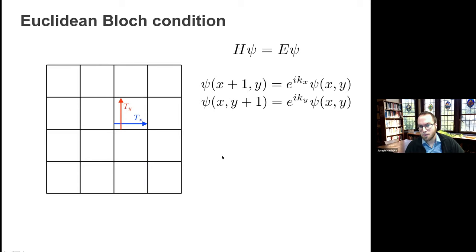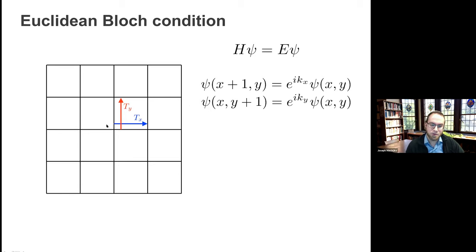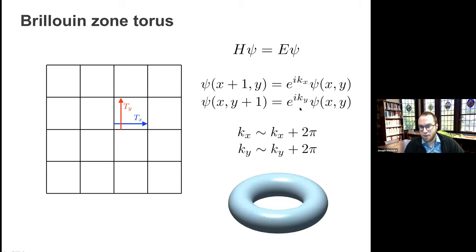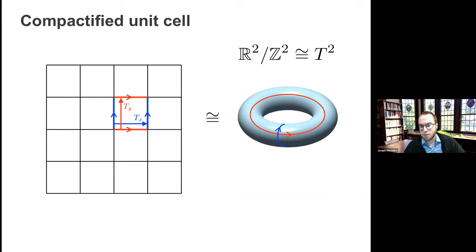How do we solve this problem? We know that we have Bloch theory. The Hamiltonian is the same in every unit cell, so we can solve it in one unit cell subject to the twisted periodic boundary condition — the Bloch condition. We require the wave function to pick up a phase factor of e^{ikx} or e^{iky} as we translate by one unit in the horizontal or vertical direction. This is a well-defined self-adjoint problem giving a discrete set of eigensolutions with real eigenenergies. Since kx and ky appear in complex exponentials, they are periodic variables — periodic modulo 2π — and therefore the crystal momentum lives in a torus, the well-known Brillouin zone in two dimensions.